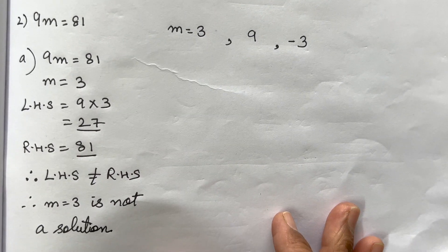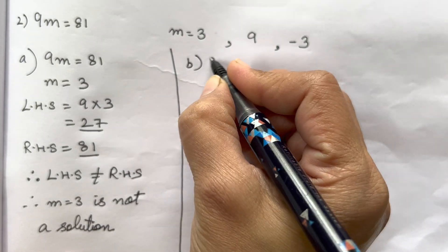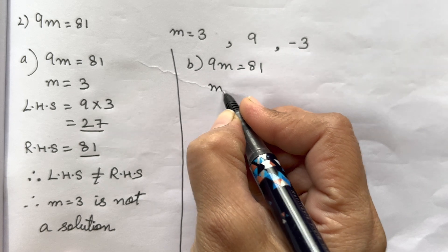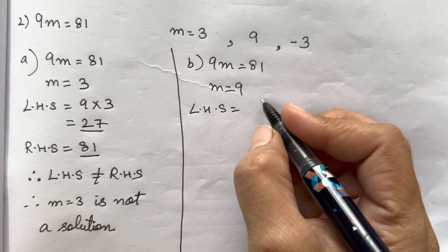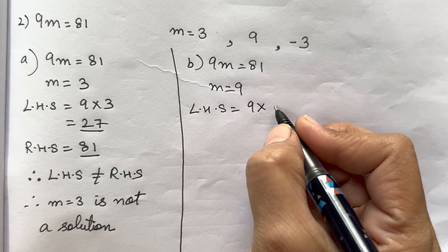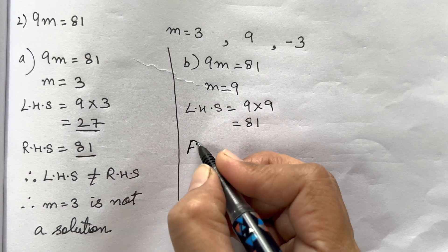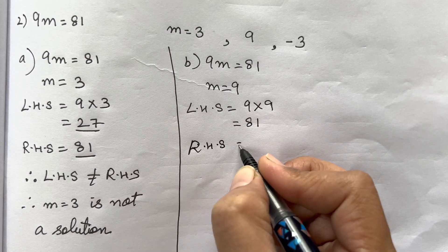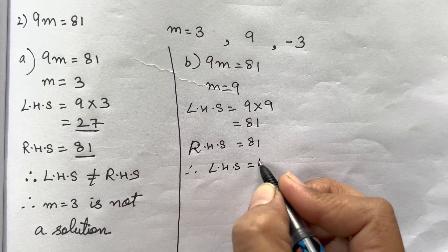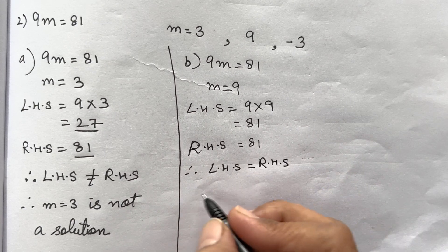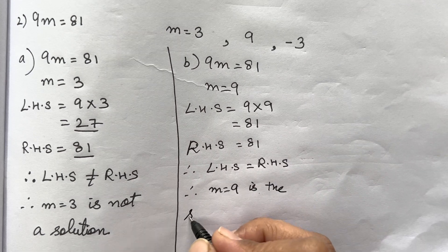Now the second substitution: same equation 9m = 81, m = 9. Left Hand Side is 9 × 9 = 81. Right Hand Side is also 81. Therefore LHS equals RHS, and therefore m = 9 is the solution.